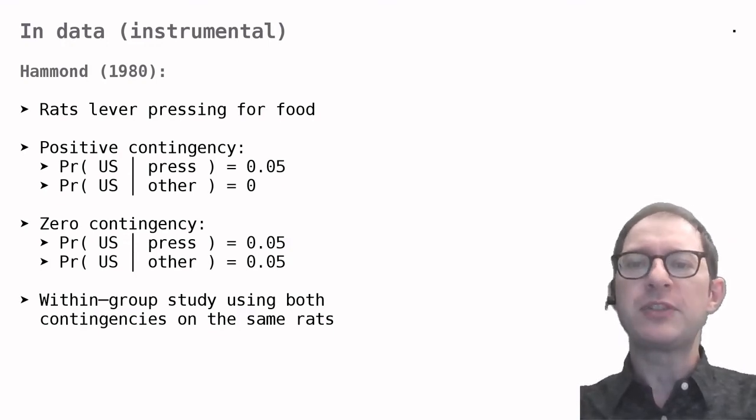Hammond ran an illustrative experiment. Rats were first trained to press a lever for food under the positive contingency. That is, food was delivered only if they pressed the lever, and each press had a 5% probability to result in food. On average, the rat had to press 20 times for each food delivery.